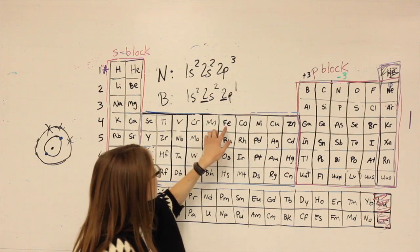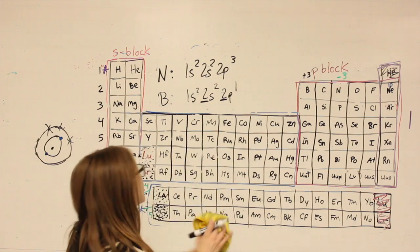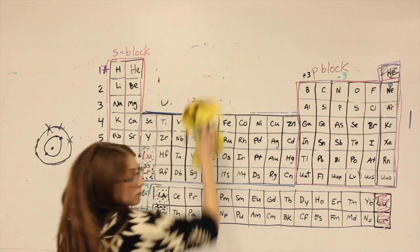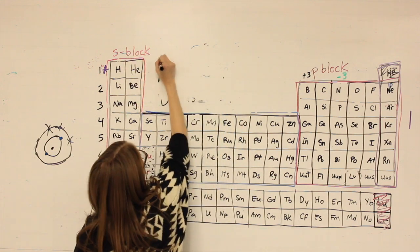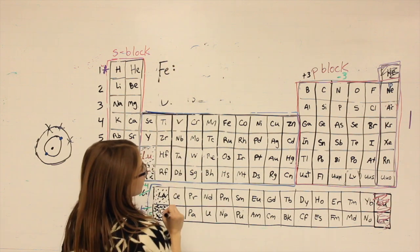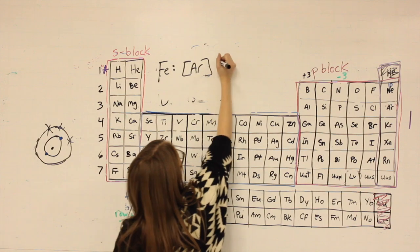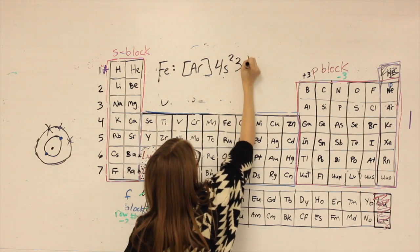If we look at something like iron, which is a transition metal, argon, 4s2, 3d6.